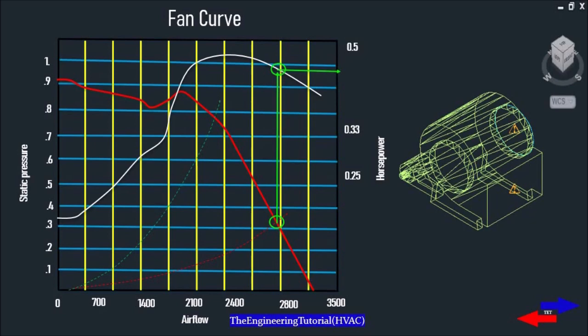is the system curve, and the green dotted line is called the surge line and it's also known as the do-not-select line. So we do not select the fan near or close to the left of that line. As